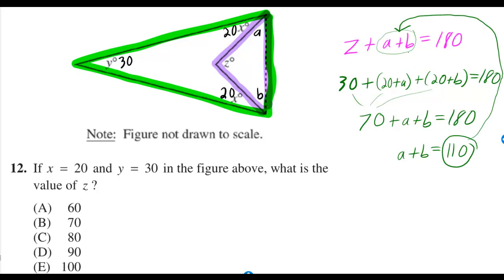Then we'll take the 110 and substitute it where we see A plus B in the pink equation. And if you subtract 110, you get Z is equal to 70.